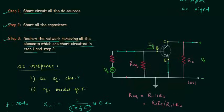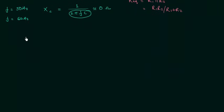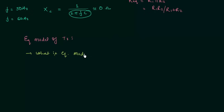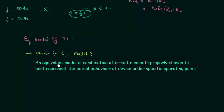The next thing is the equivalent model of the transistor. What is an equivalent model? An equivalent model is a combination of circuit elements like resistors, capacitors, etc., properly chosen to best represent the actual behavior of the device under a specific operating point.